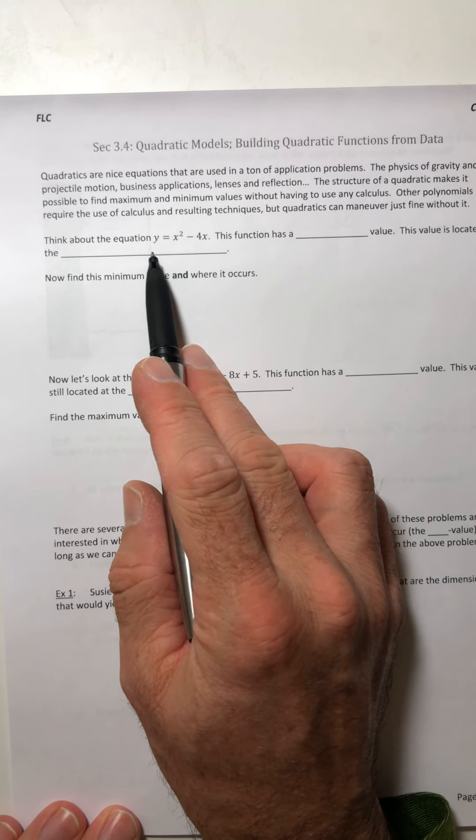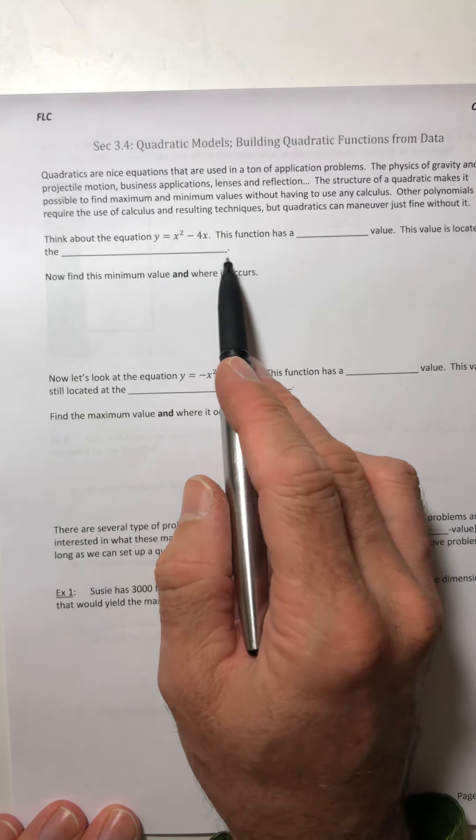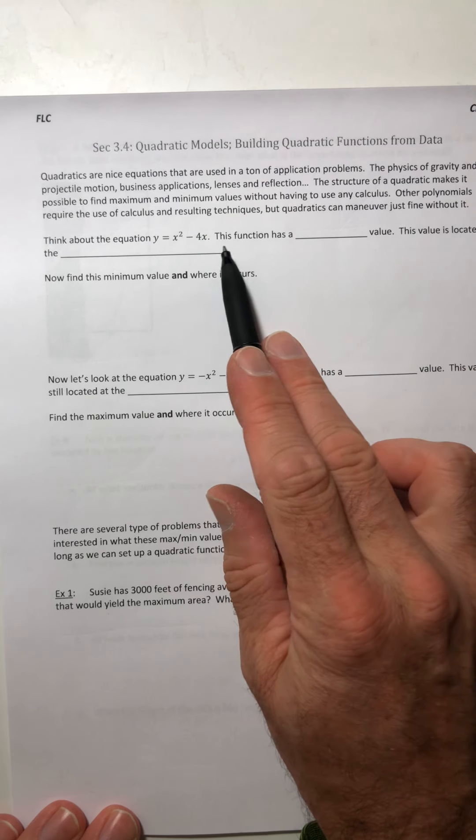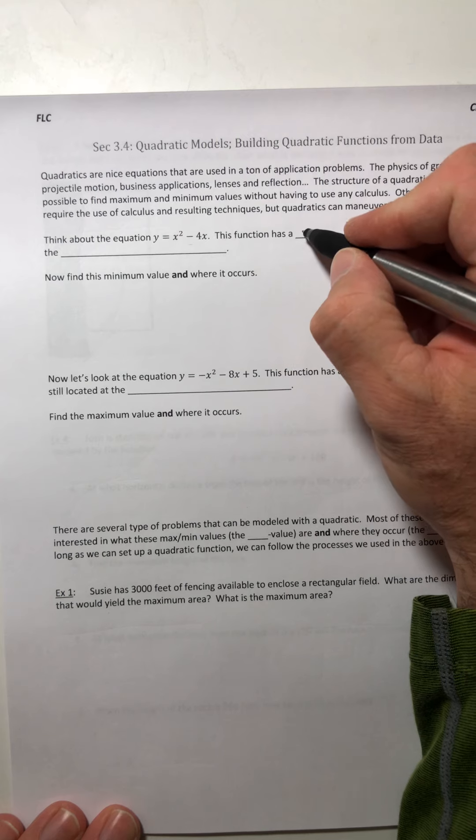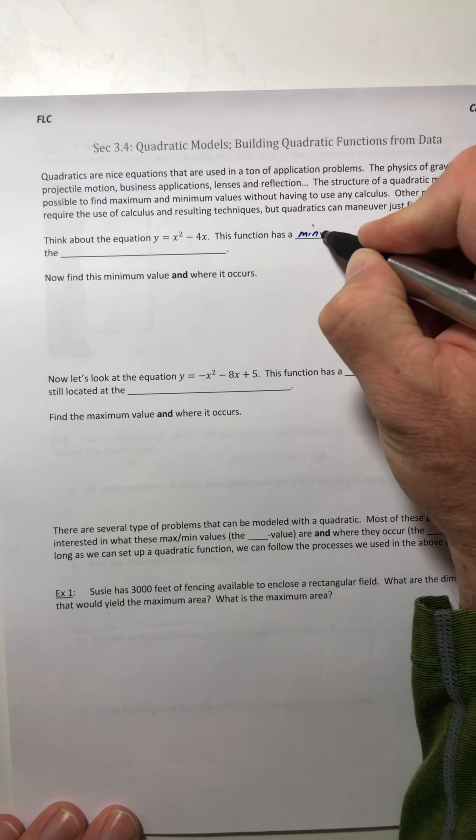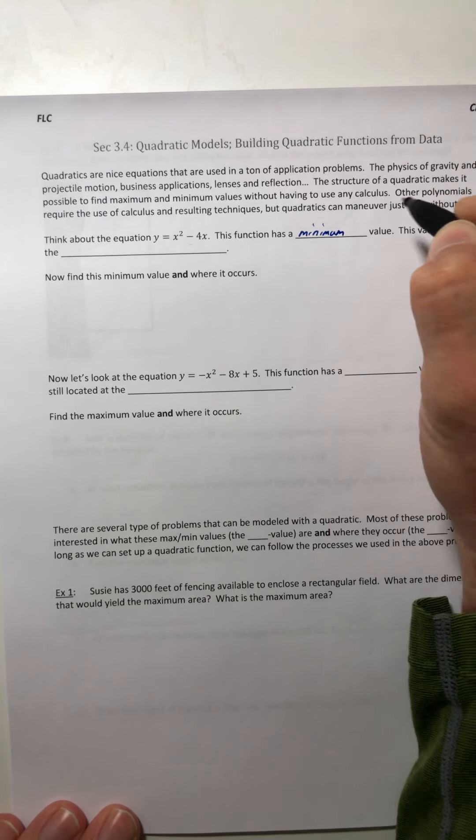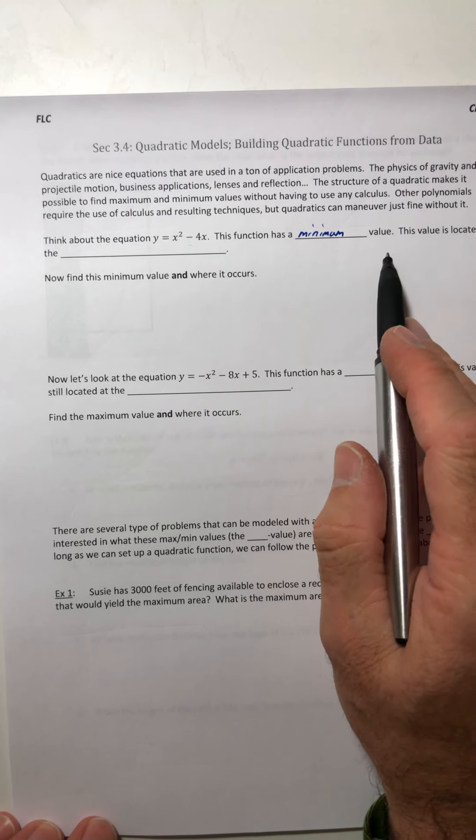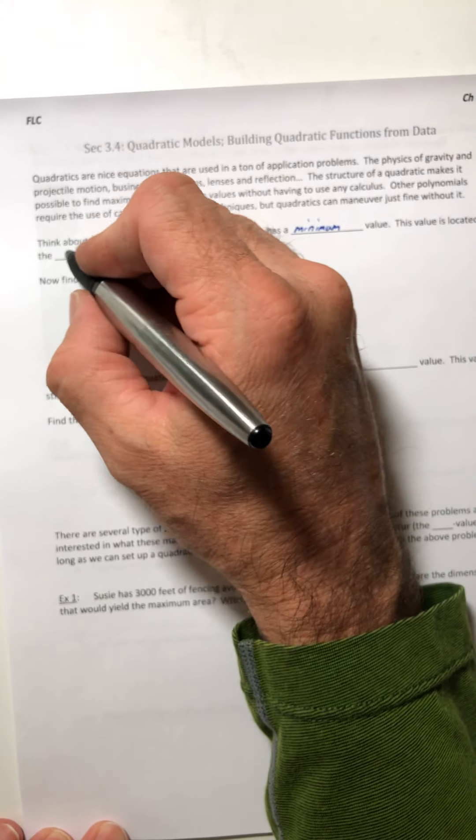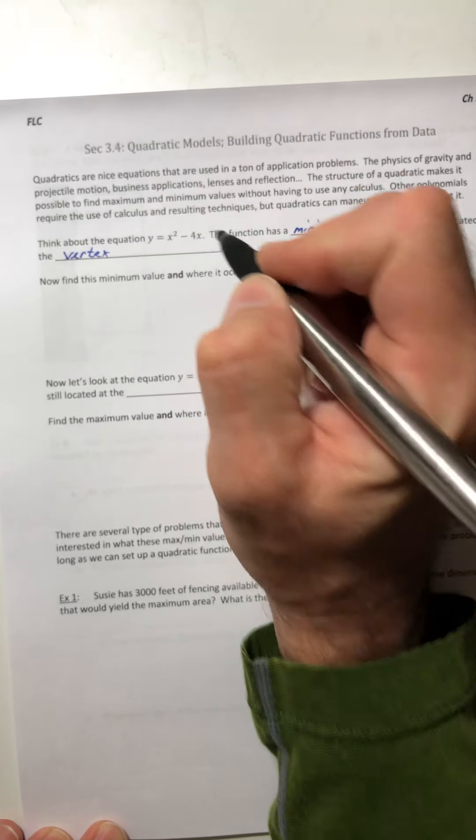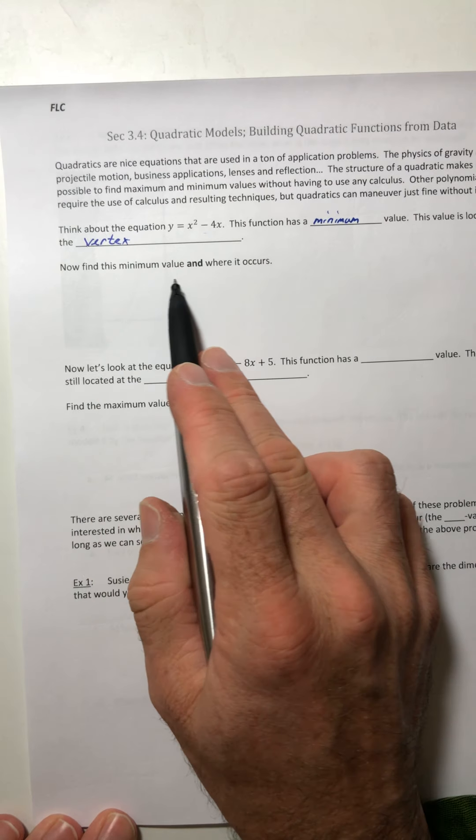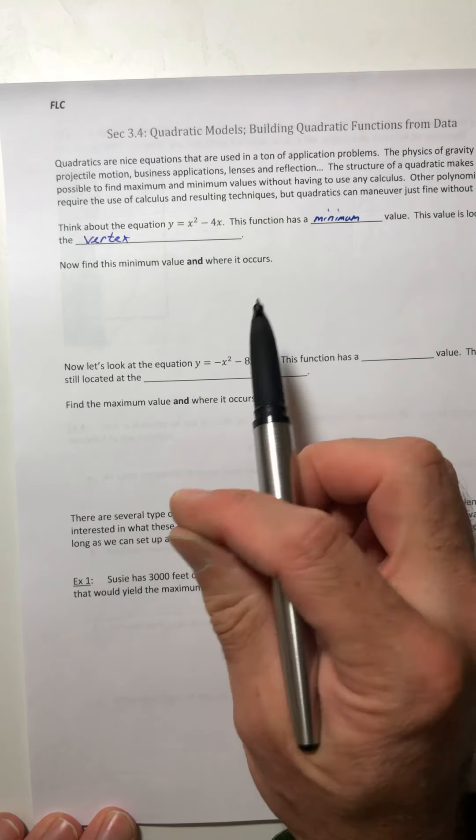So think about the equation y equals x squared minus 4x. This function, this one in particular, has a minimum value. This value is located at the vertex. So now let's find this minimum value and where it occurs. So it's like, well, how did you know it had a minimum value? Well, let's think about the graph.